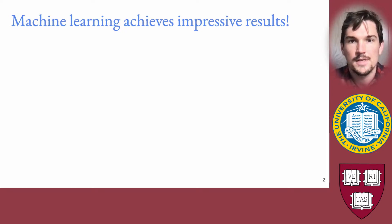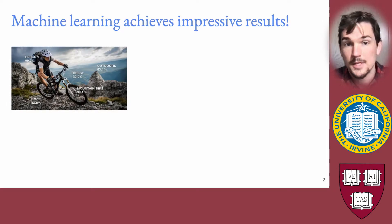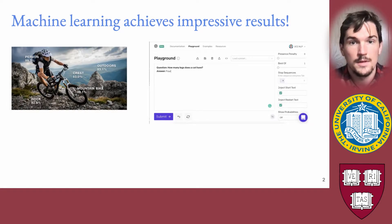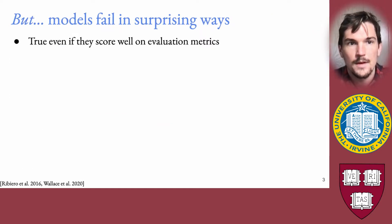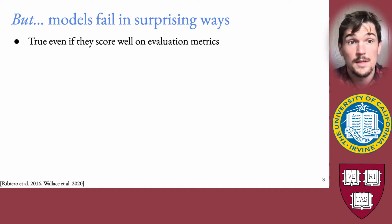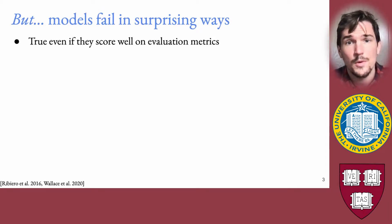Machine learning achieves impressive results across many different domains — ranging from object detection, to natural language processing, to even biology. Though machine learning models achieve impressive results, they can often fail in surprising and sometimes counterintuitive ways, and this is true even if they score well according to evaluation metrics.